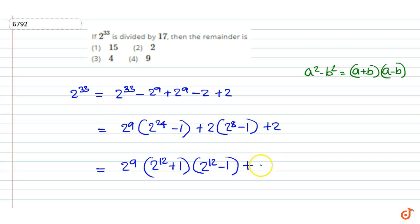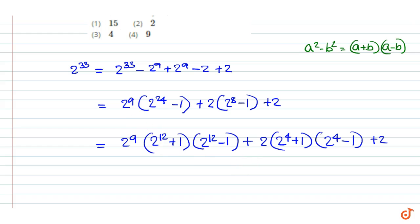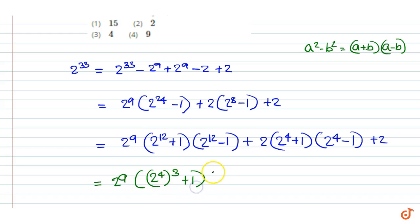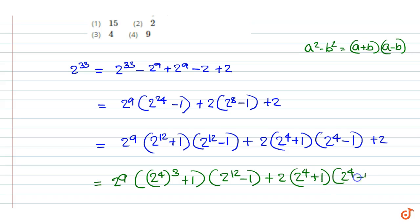This can be factored as 2 into 2 to the power 4 plus 1 into 2 to the power 4 minus 1, plus 2. This can be further factored as 2 to the power 9 into 2 to the power 9 into 2 to the power 4 plus 1 into 2 to the power 12 minus 1, plus 2 into 2 to the power 4 plus 1 into 2 to the power 4 minus 1.